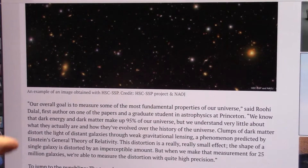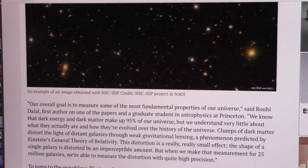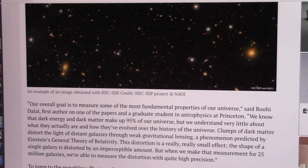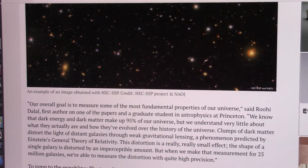Their overall goal was to measure some of the most fundamental properties of the universe — the most basic, tiniest little bits of what makes up the universe, said Dalal, first author on one of the papers and a graduate student in astrophysics at Princeton. He says we know that dark energy and dark matter make up ninety-five percent of the universe, which is interesting. They understand very little about what dark matter actually is, and they study clumps of dark matter that distort light through gravitational lensing.